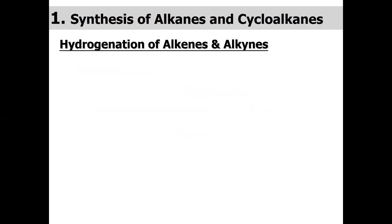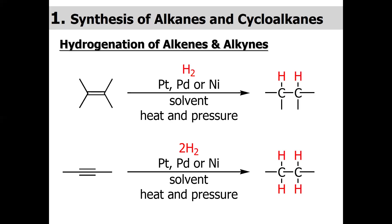Now let's go to the lecture. The first method to synthesize alkanes is hydrogenation of alkenes and alkynes. Alkenes have a carbon-carbon double bond and one degree of unsaturation, so one IHD. Alkynes have two degrees of unsaturation, or two IHD. Alkenes have one sigma bond and one pi bond in the carbon-carbon double bond. Alkynes have a carbon-carbon triple bond: one sigma bond and two pi bonds.